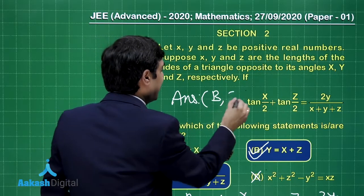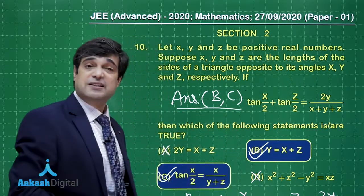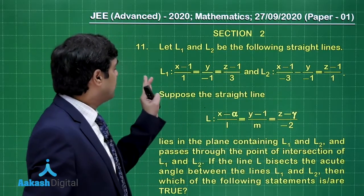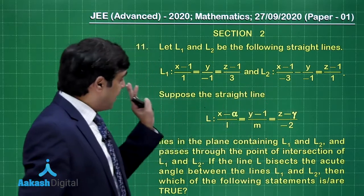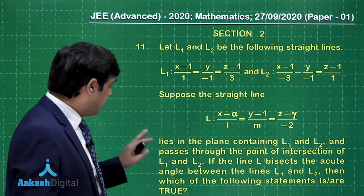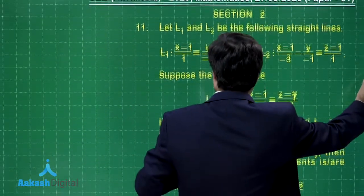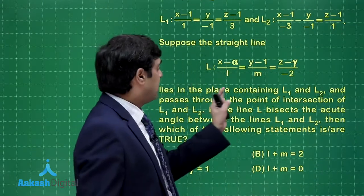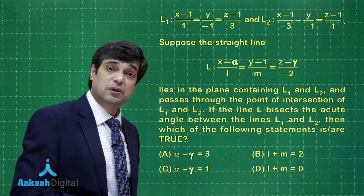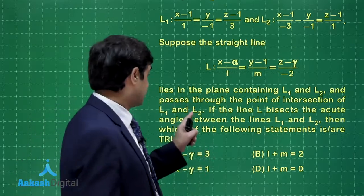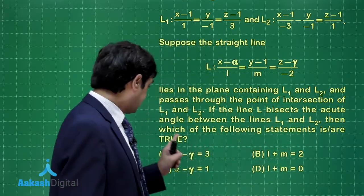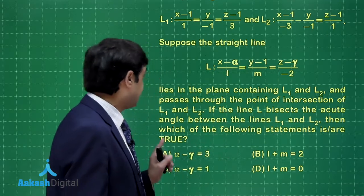The correct answers for question 10 are b and c. I am sure this question is clear. Now, let l1 and l2 be two lines, and another straight line l is also given — three lines in three-dimensional geometry. The question says l lies in the plane containing l1 and l2, passes through the point of intersection of l1 and l2, and bisects the acute angle between l1 and l2. Which of the following statements is true?